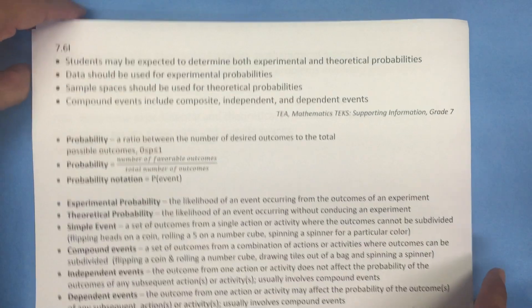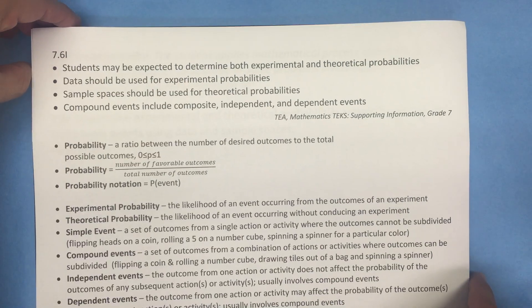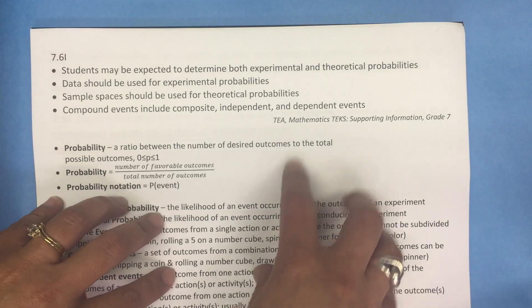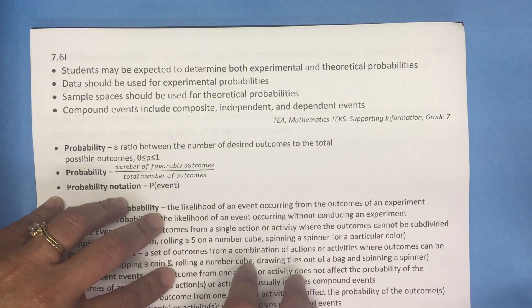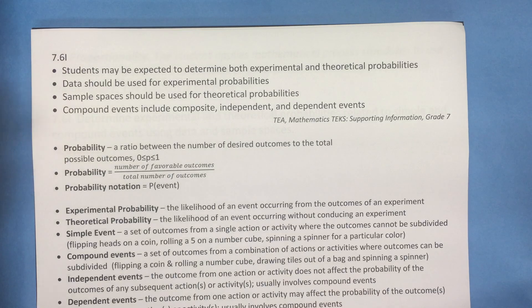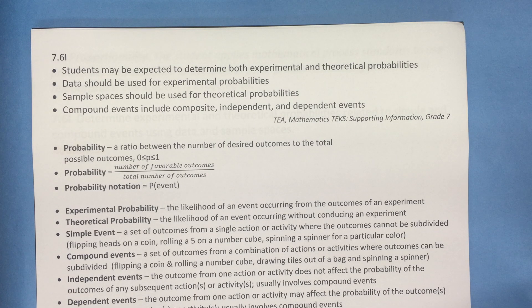I'd like to take a moment and share some information that comes from TEA — the mathematics TEA supporting information document for grade 7. In that document it says that students may be expected to determine both experimental and theoretical probabilities. Data should be used for experimental probabilities, and sample spaces should be used for theoretical probabilities.